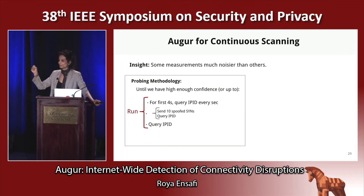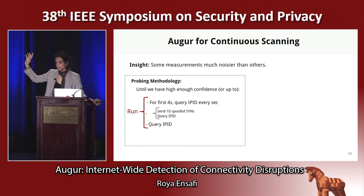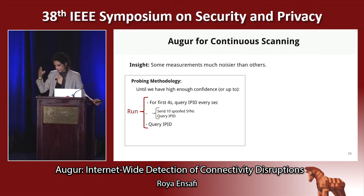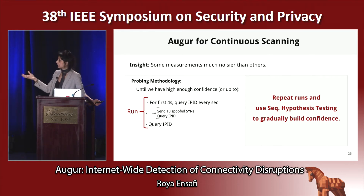Putting all this together, this is Augur's probing method. For four seconds I do IPID queries, then over one second I send 10 spoofed SYN packets while watching the IPID queries. Then I look at the delta IPIDs — do I see a sudden jump? How confident am I that this jump results from my own spoofed packets? I continue these runs until I'm confident. It turns out there is a statistical analysis that can help: sequential hypothesis testing, which helps us gradually build confidence by repeatedly running and collecting samples.